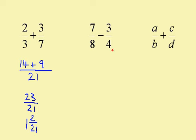The lowest common denominator here is 8. 8 into 8 goes once, and 1 times 7 is 7. 4 into 8 goes twice, and 2 times 3 is 6. So I have 7 minus 6 over 8, which is 1 over 8.